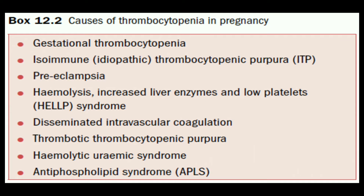The causes of thrombocytopenia include: first, gestational thrombocytopenia — when no other cause is found in pregnancy, gestational thrombocytopenia should be considered, and it is very common. Second is idiopathic or isoimmune thrombocytopenic purpura (ITP). Third is preeclampsia, and fourth is the HELLP syndrome, also related to hypertensive disorders. Apart from those, we may have DIC, TTP, HUS (hemolytic uremic syndrome), and antiphospholipid syndrome. These are the very common causes we need to remember.